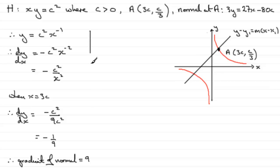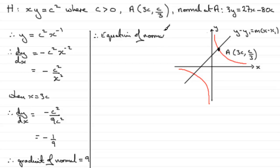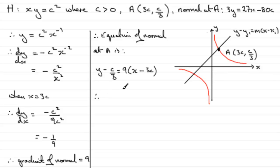Now that we've got the gradient of the normal, we can say that the equation of the normal at A is: Y minus Y1, so that's C over 3, equals M — the gradient, which is 9 — multiplied by X minus X1, X1 being 3C. We now multiply throughout by 3, giving 3Y minus C equals, and 9 times 3 gives 27. Expanding the bracket: 27X, and then 27 times minus 3C gives minus 81C.